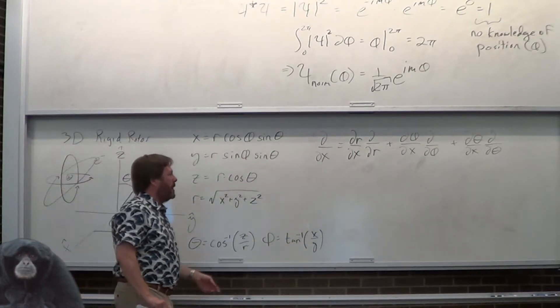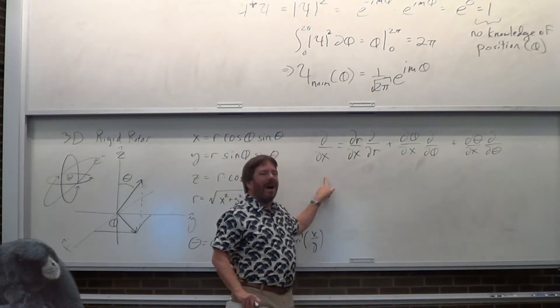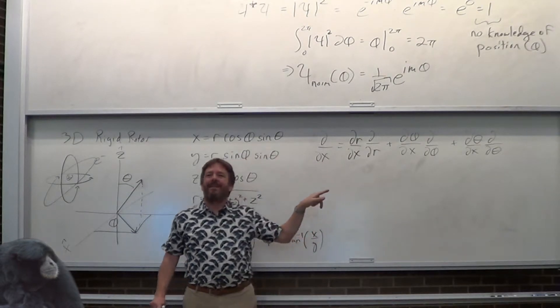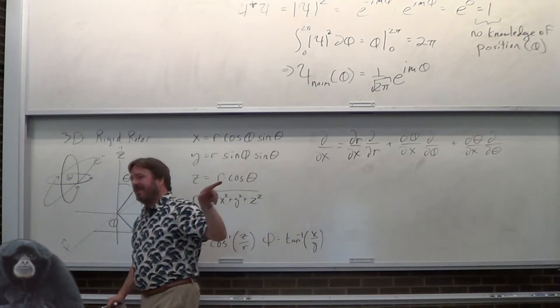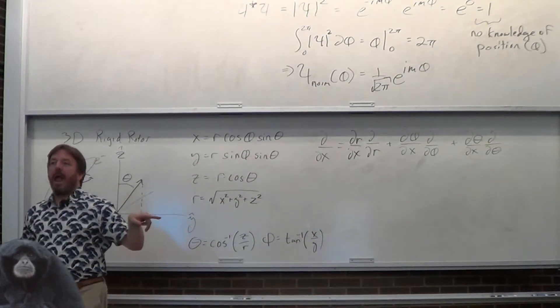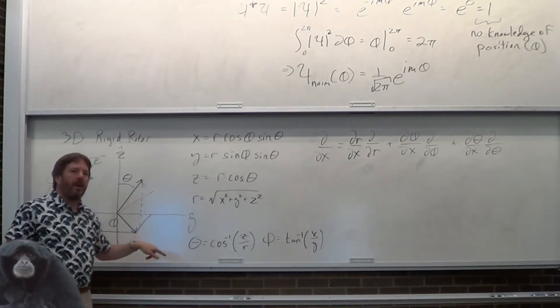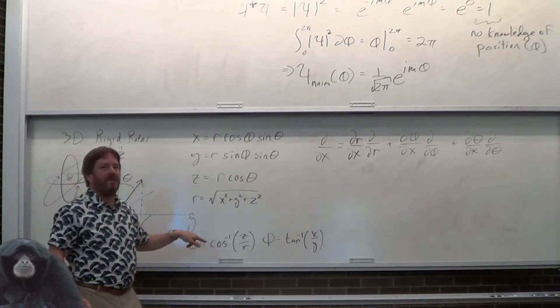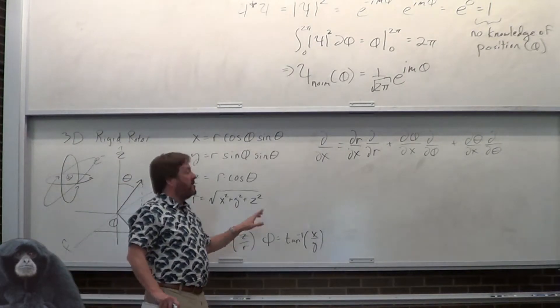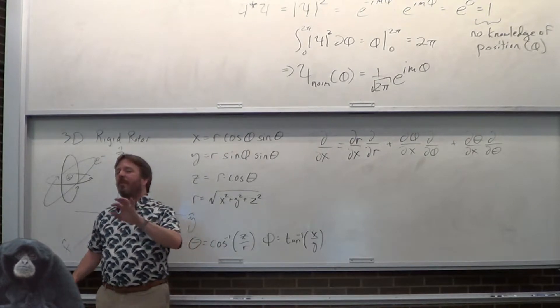Then you have to square it, do y and z, add them all together, and then simplify.